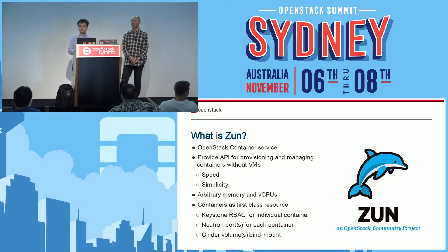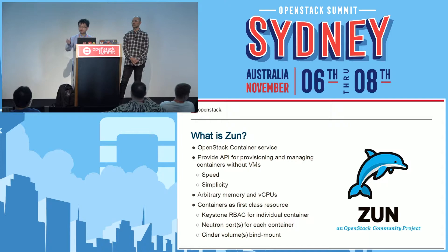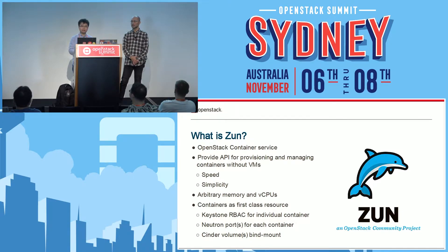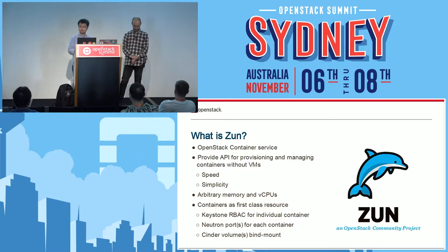With Zun, you can specify an arbitrary number of memory and an arbitrary number of CPUs. This is different from Nova, where you need to select from a set of flavors. But in Zun, you have the flexibility to choose memory and CPUs. Also, Zun uses the container as the first-class resource, meaning you can use Keystone to provide role-based access control at the level of individual containers.